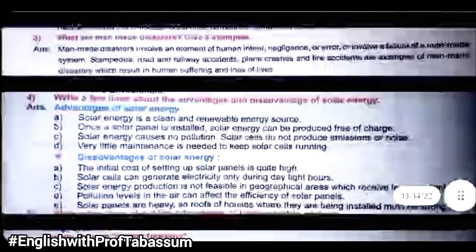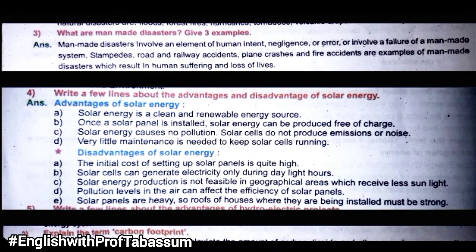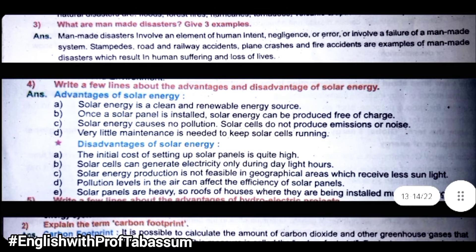What are man-made disasters? Give three examples. Man-made disasters include road accidents, railway accidents, plane crashes, and fire accidents. These are the side headings. Under each one, elaborate — for example, how fire accidents happen at home when parents are not careful with children. Similarly for railways, roadways, and plane crashes. Write side headings and then expand your answer to make it longer.